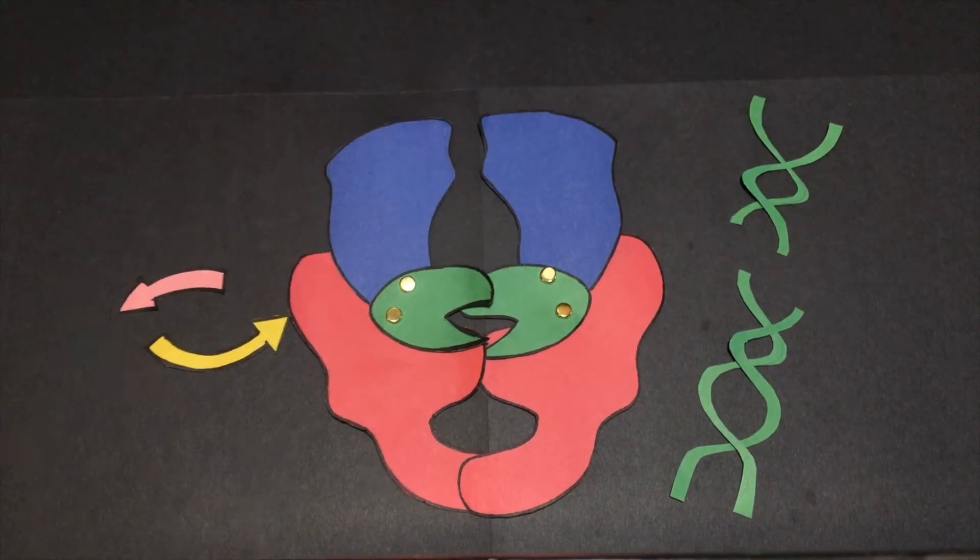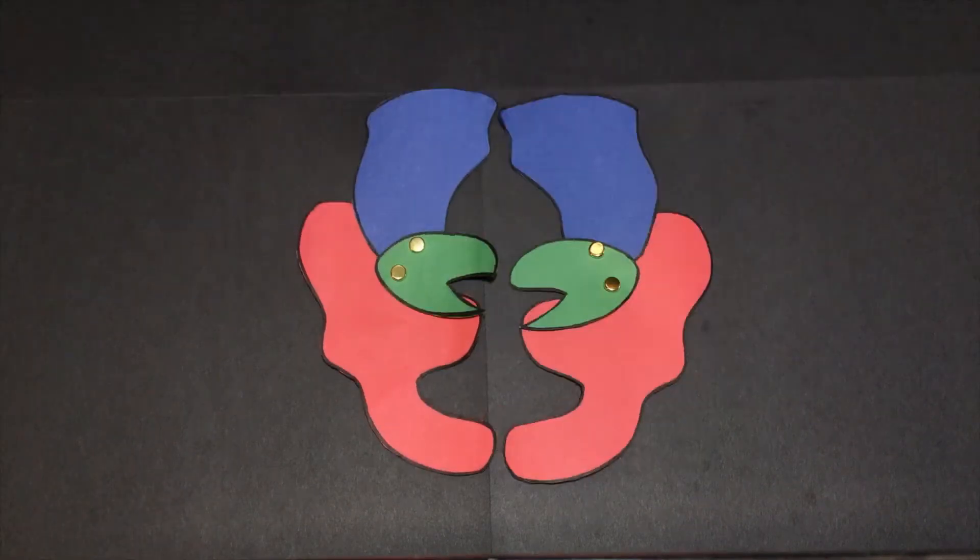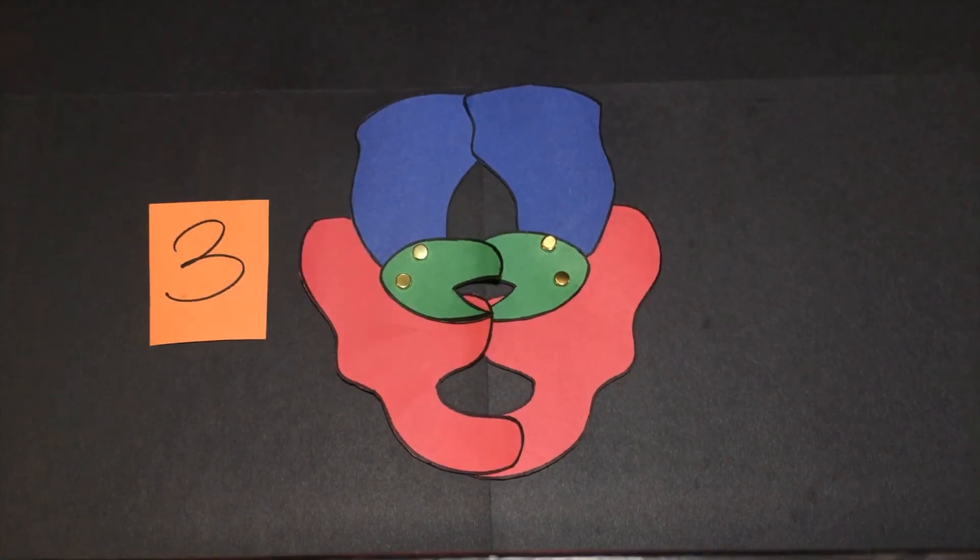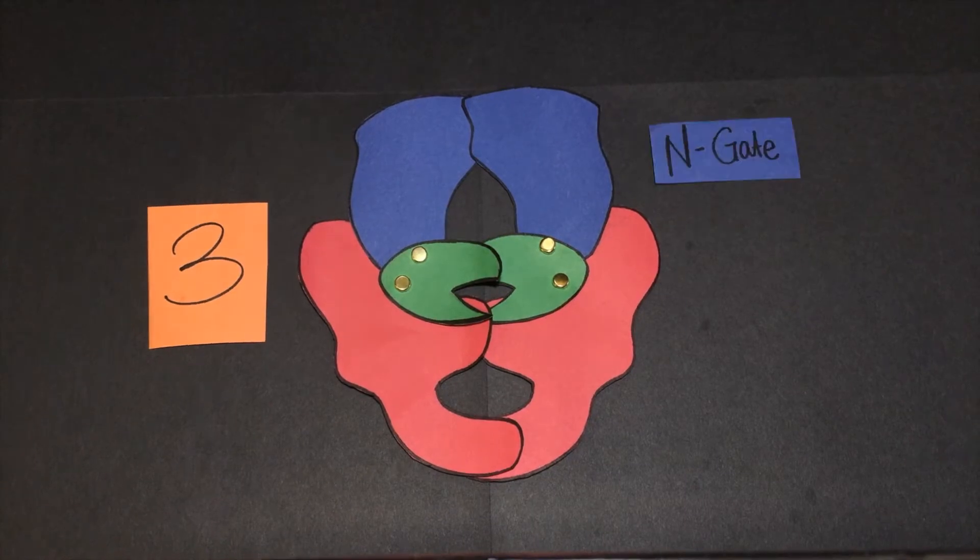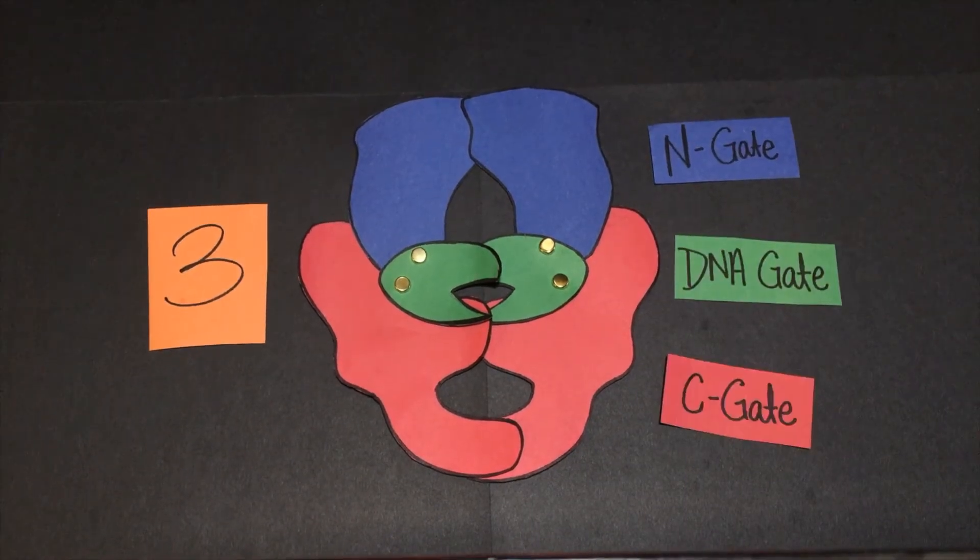Top 2a is a homodimeric protein. Each subunit structure can be broken down into three major components that are connected by hinge-like regions: the N gate, the DNA gate, and the C gate.